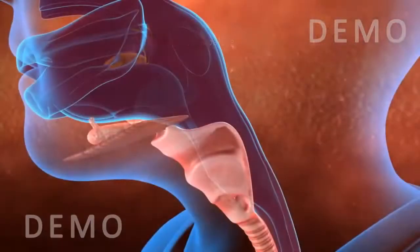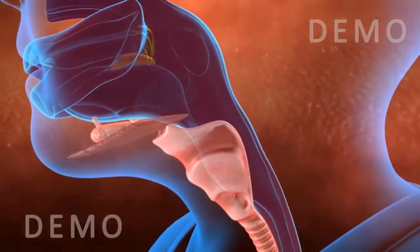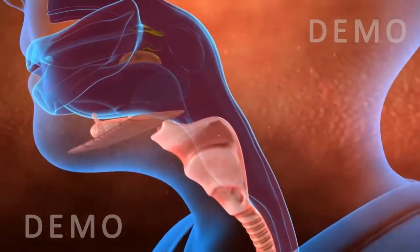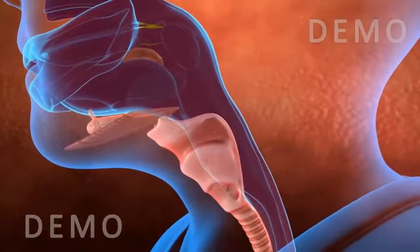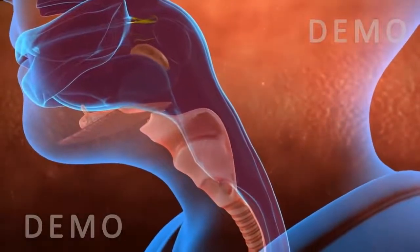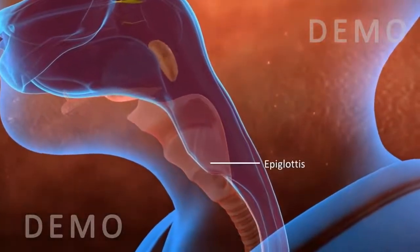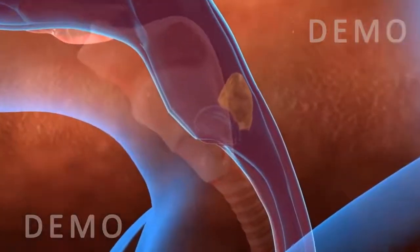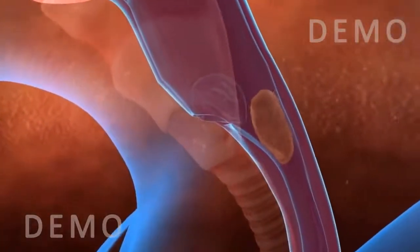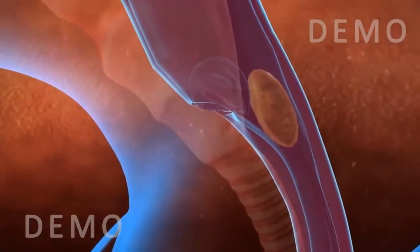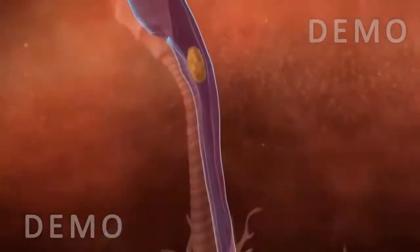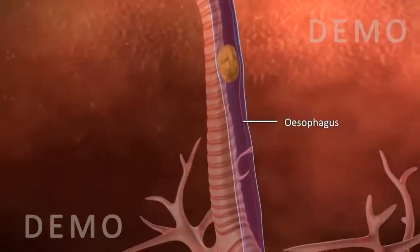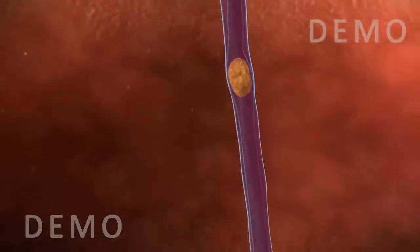As the food is swallowed, the soft palate blocks the upper throat called the pharynx, which prevents the entry of food into the nasal cavity. When the food passes over the epiglottis — a flap-like structure — it pushes down the epiglottis, which prevents the entry of food into the trachea.